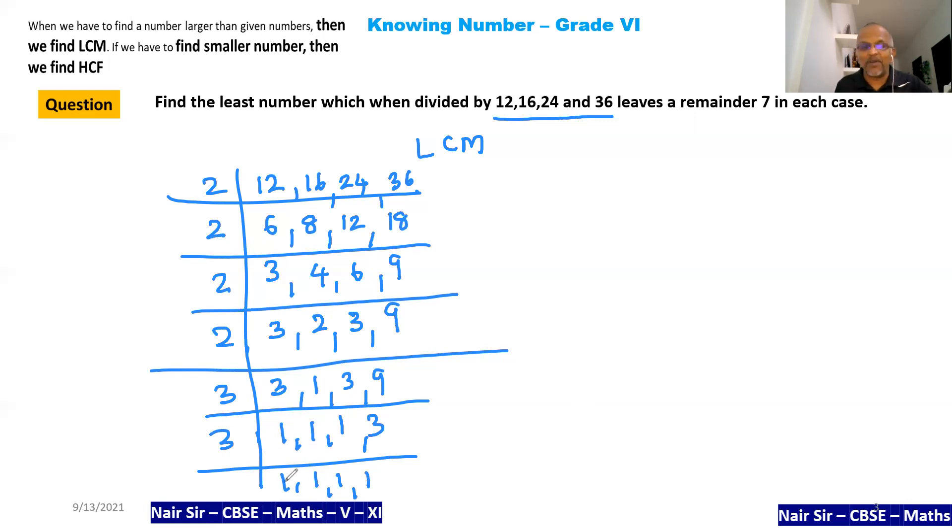Now what will I do? I will multiply this. 2 times 2 is 4, 4 times 2 is 8, 8 times 2 is 16.